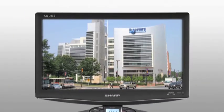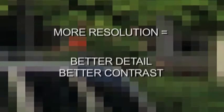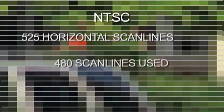Each video image is made up of pixels. The more pixels, the better the screen resolution, which translates image-wise into better detail and better contrast. For example, NTSC has a total of 525 horizontal scan lines, but only 480 of these are used for the actual image.